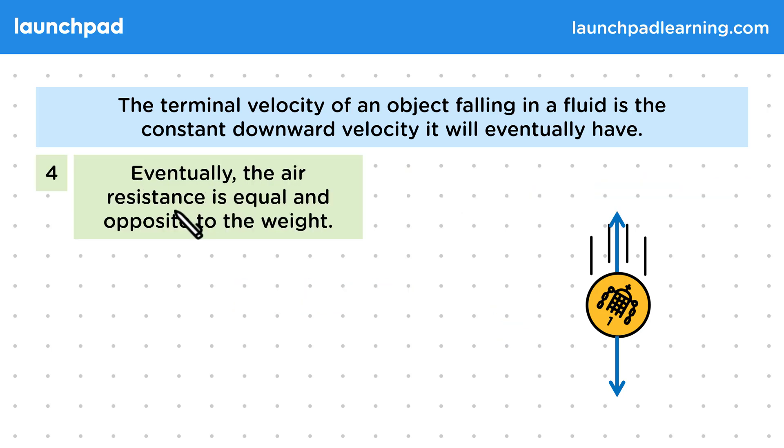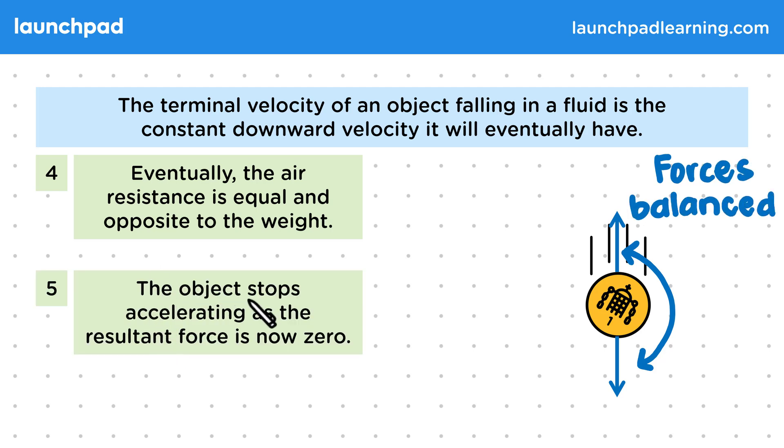Eventually, the air resistance is equal and opposite to the weight. By equal and opposite, we mean that when two forces are in opposite directions and have the same magnitude, we can say that the forces are balanced. So the object stops accelerating as the resultant force is now zero. The coin was accelerating in the direction of the resultant force and increasing its speed. But now that there is no resultant force, there's no acceleration and the speed doesn't change.